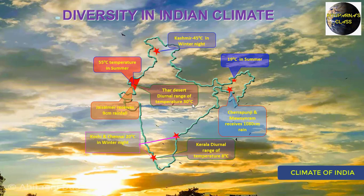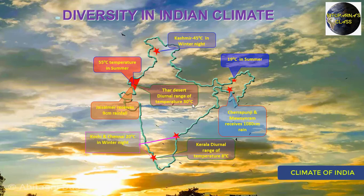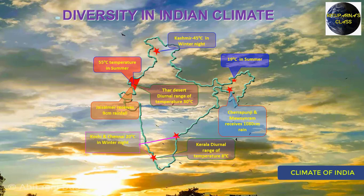The diurnal range of temperature means the difference between day temperature and night temperature. For example, in Kerala, if the day temperature is 28 degrees centigrade but the night temperature is 20 degrees, the diurnal range will be 8 degrees centigrade. In Rajasthan, if the day temperature is 55 degrees and the night temperature is 25 degrees, the diurnal range will be 30 degrees centigrade.